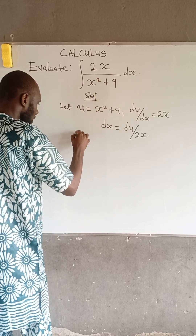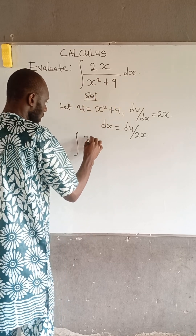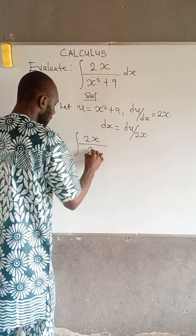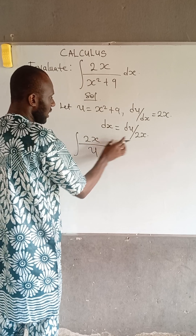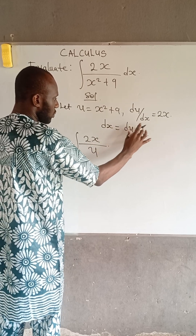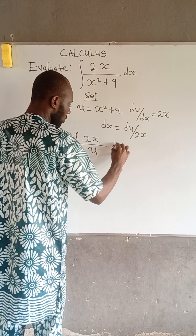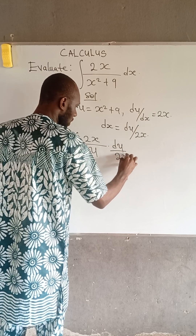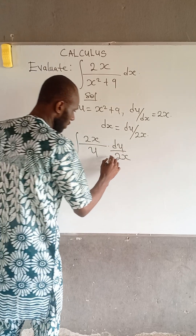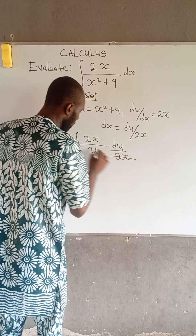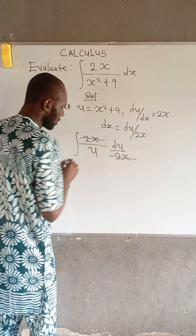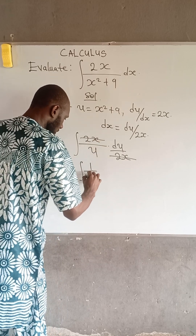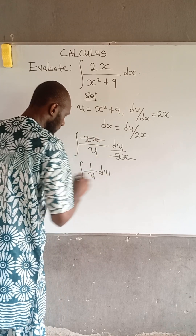This becomes the integral of 2x divided by u, multiplied by du divided by 2x. At this point, the 2x cancels out, and we are left with the integral of 1 divided by u, du.